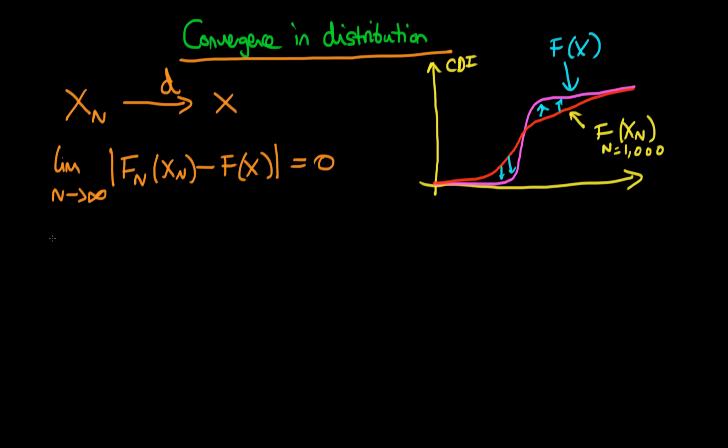So what's the relationship between convergence in distribution and convergence in probability? Well it turns out that if a random variable converges in probability then it also converges in distribution. So convergence in probability actually implies convergence in distribution.